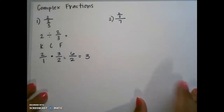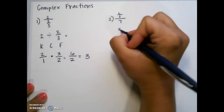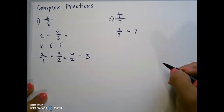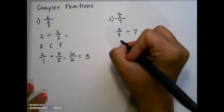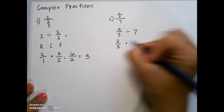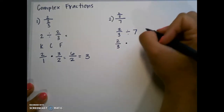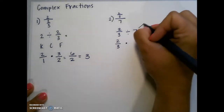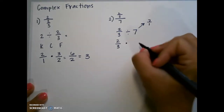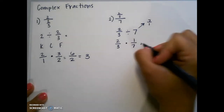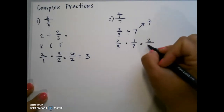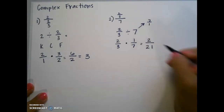For our next one, again this means to divide: 2 thirds divided by 7. So we're going to keep our first fraction, change division to multiplication. Since this is actually 7 over 1, when we flip it, it becomes 1 over 7. 2 times 1 is 2, and 3 times 7 is 21.